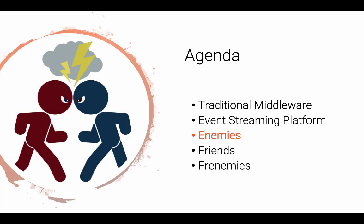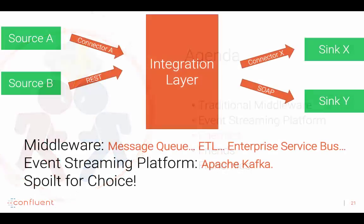With these concepts in mind, let's look at the details. First, these two concepts are enemies — absolutely — because both want to be the integration layer in the middle. Traditional middleware might be a message queue, an ETL tool for batch processing, or an enterprise service bus for request-response or messaging. Then you have the event streaming platform, typically Apache Kafka. The first difference is that for traditional middleware you have plenty of different components and products — big software vendors typically have not just one middleware product but ten or more. For an event streaming platform, if you Google any company on the planet, you'll typically find they use Apache Kafka as the de facto standard.